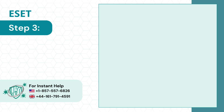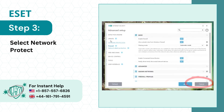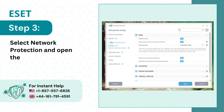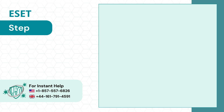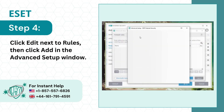Step 3: Select Network Protection and open the Advanced section. Step 4: Click Edit next to Rules, then click Add in the Advanced Setup window.